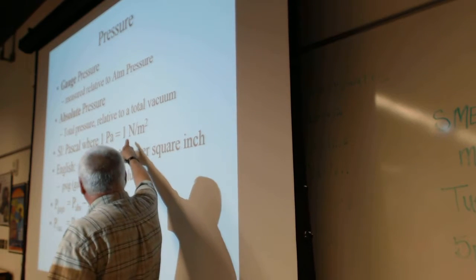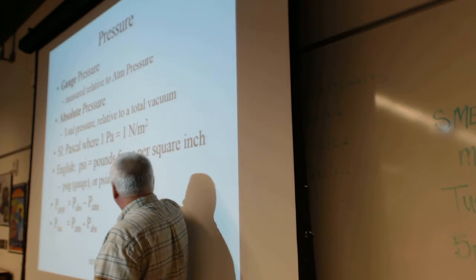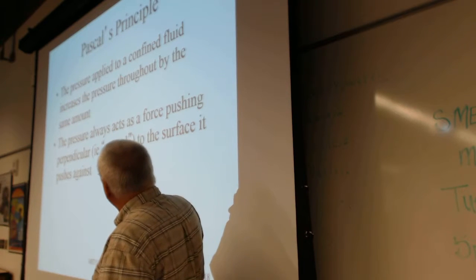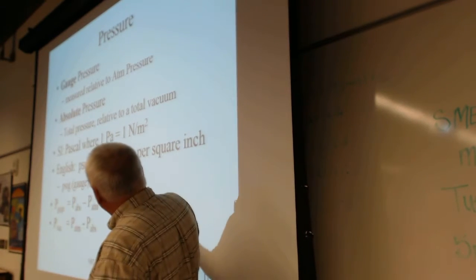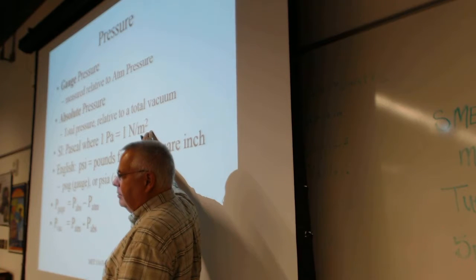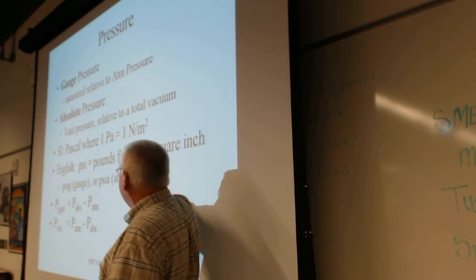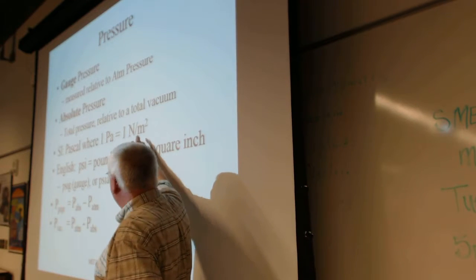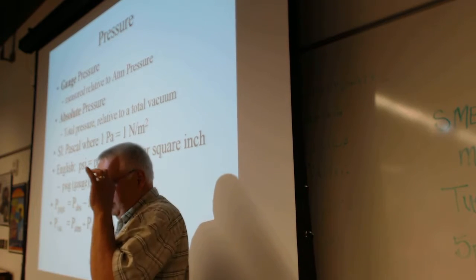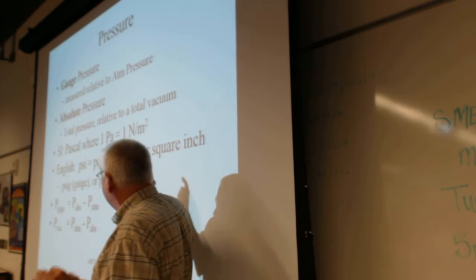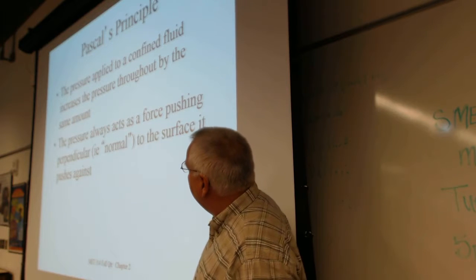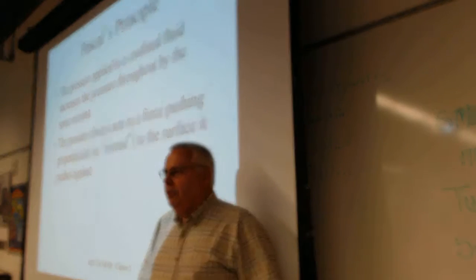Pascals - Newton per square meter - versus psi, pounds per square inch. Atmospheric pressure is 101,000 Pascals, 101 kilopascals, or 15 PSI. So that means this is a little bit of force over a square meter as opposed to a fair amount of force over a square inch. The scale is different, but we're talking about the same thing.